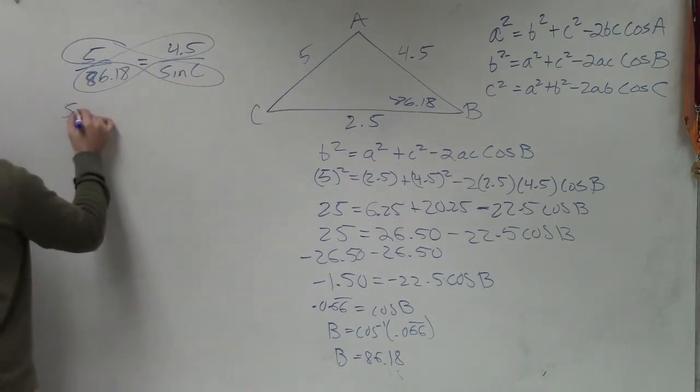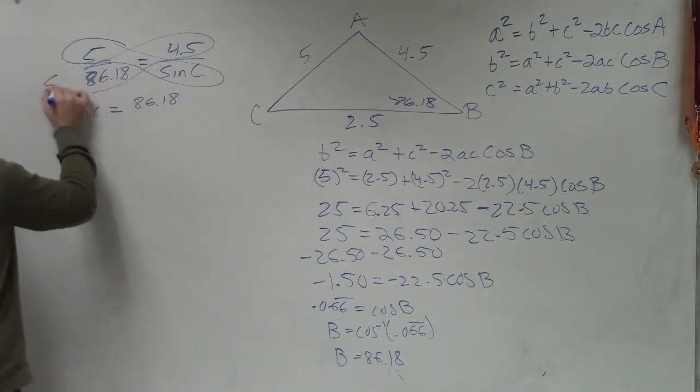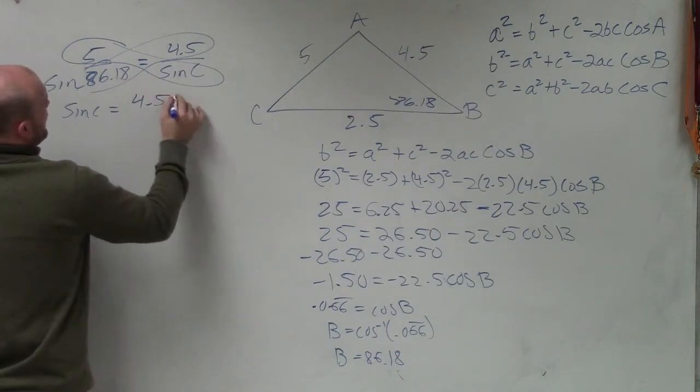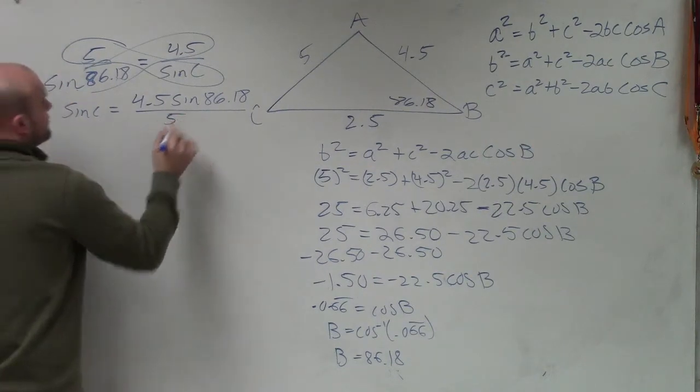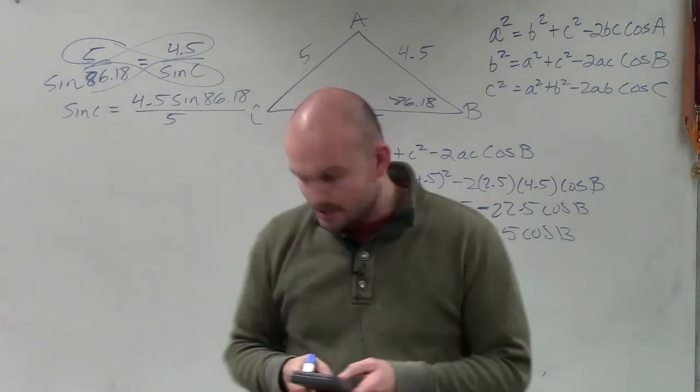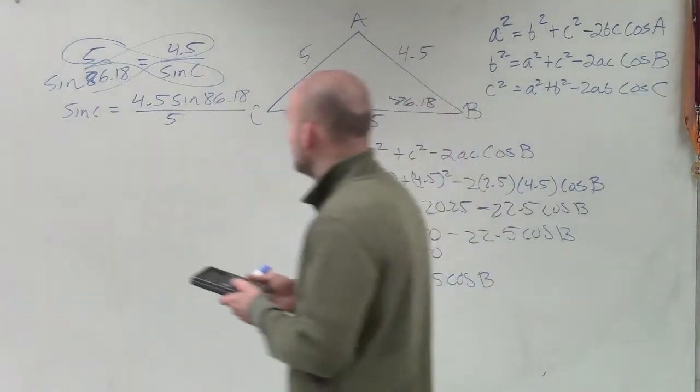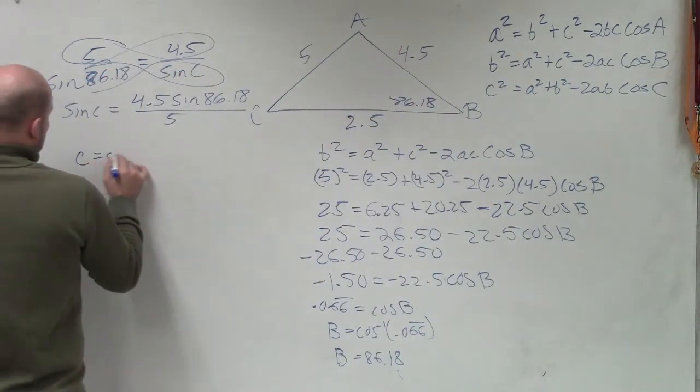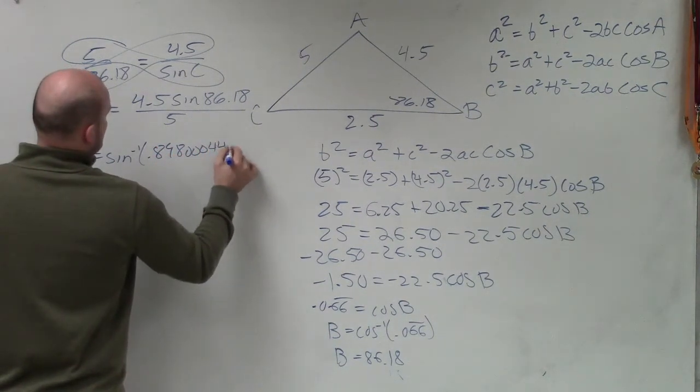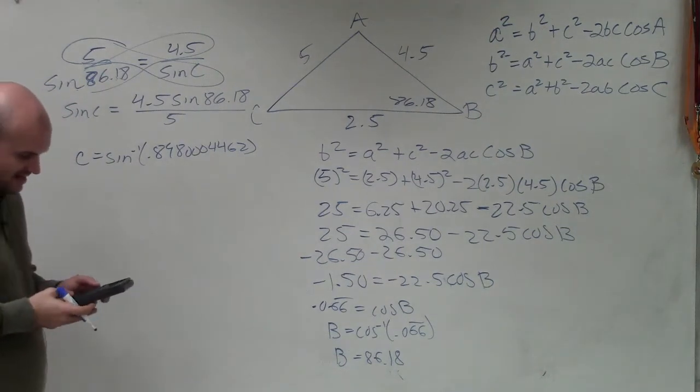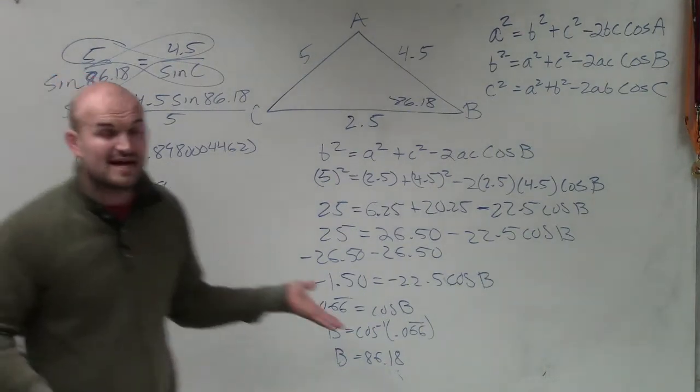So now we go to Law of Sines, where I can say the sine of c is equal to 4.5 times the sine of 86.18 divided by 5. So I do 4.5 times the sine of 86.18, divide that by 5, and then I take the inverse sine: c = sin⁻¹(0.898...). Use that whole answer. So the inverse sine is c = 63.89. So that's the acute angle.